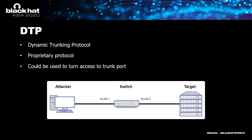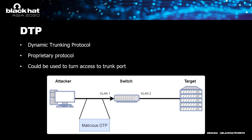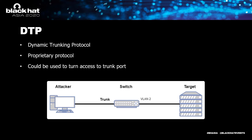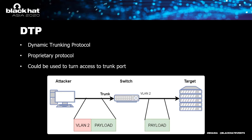A second technique for VLAN hopping uses DTP — Cisco's Dynamic Trunking Protocol — which enables automatic configuration of switch ports between access mode and trunk mode. If DTP is not turned off, an attacker can send a DTP packet instructing the switch to change the port from access mode to trunk mode. Once in trunk mode, the attacker can natively send and receive packets from any VLAN. The simple fix is to turn off DTP on any port connected to a non-trusted device.